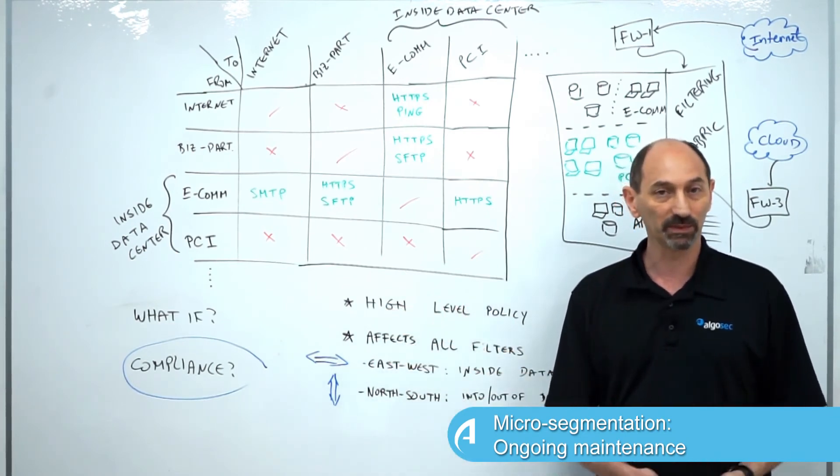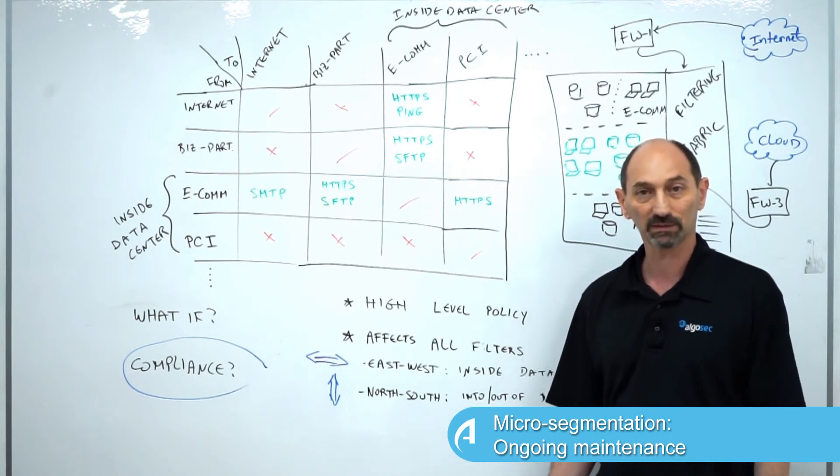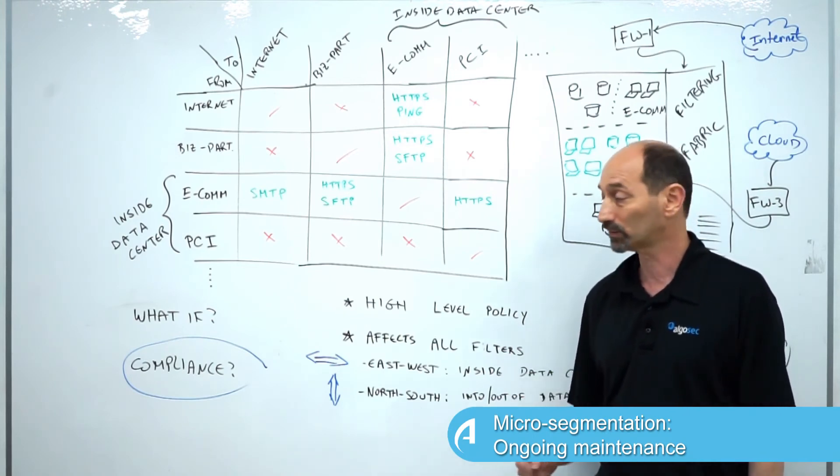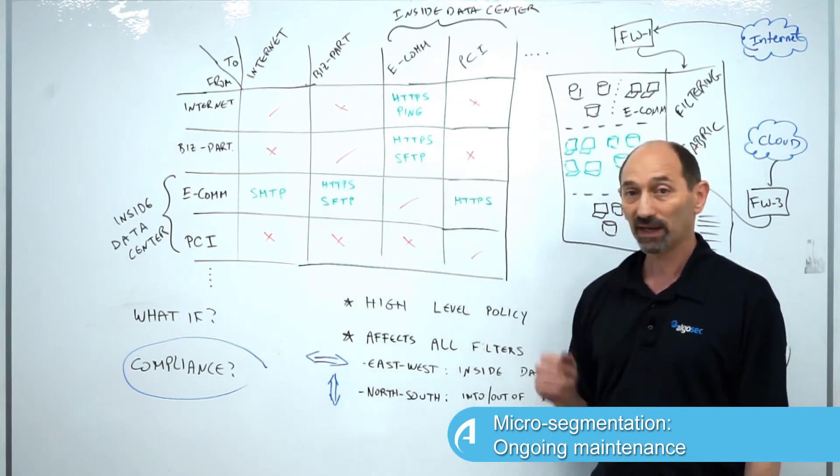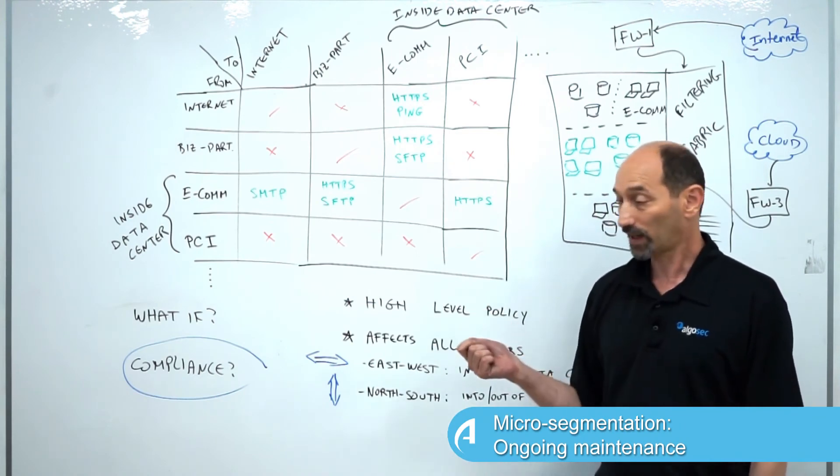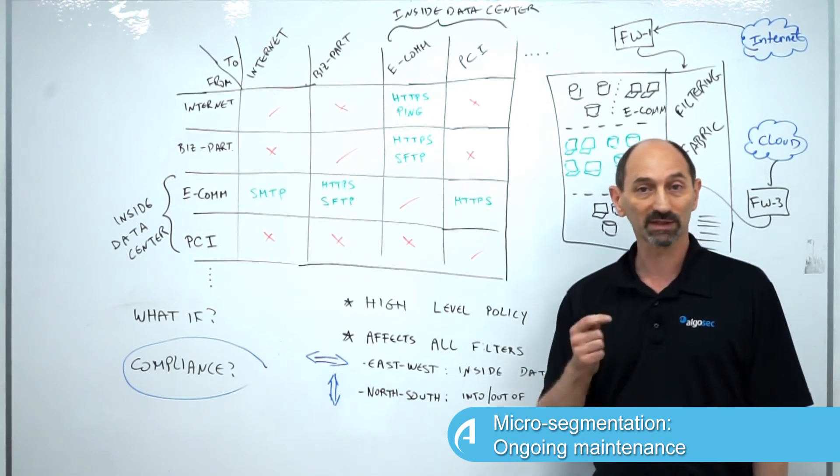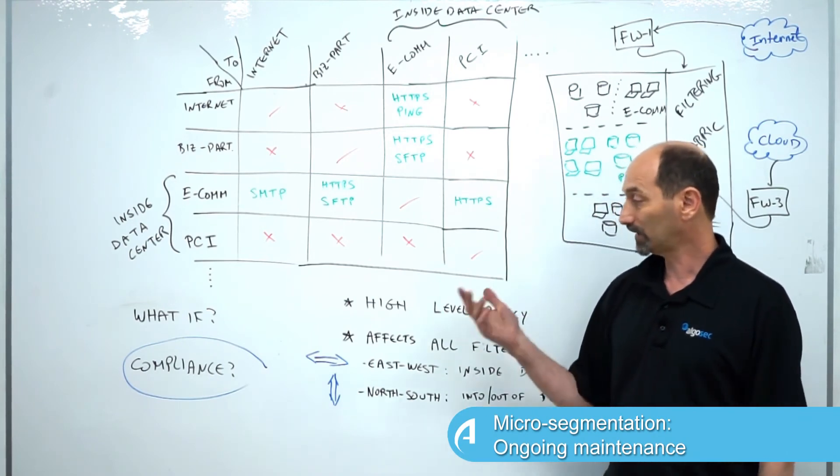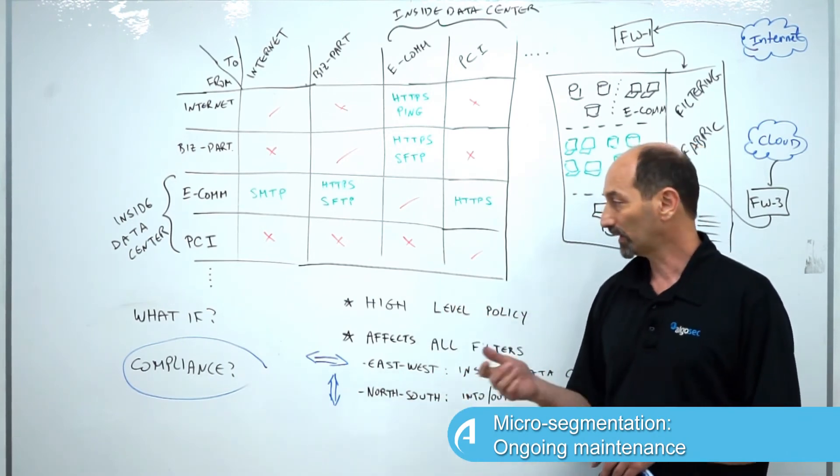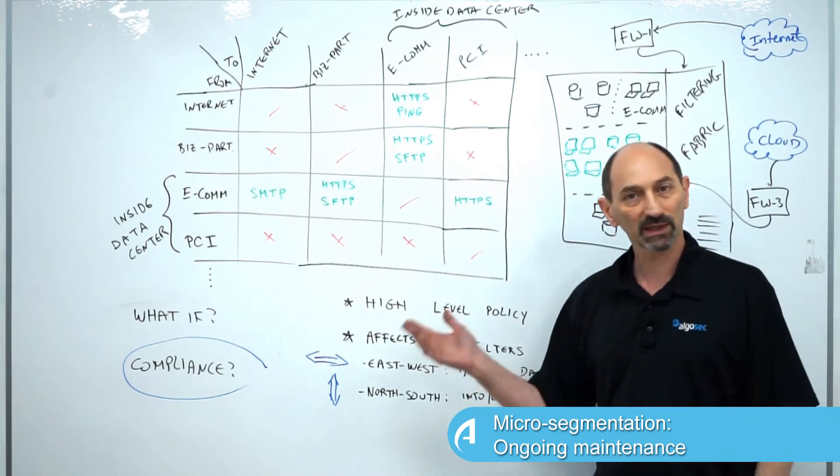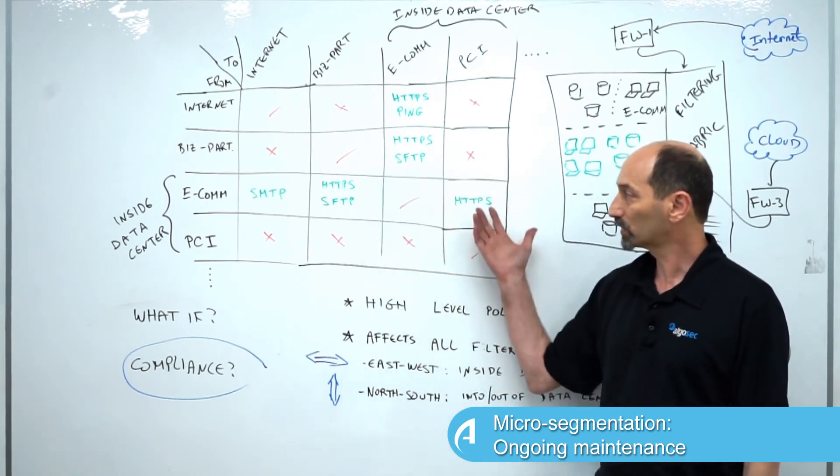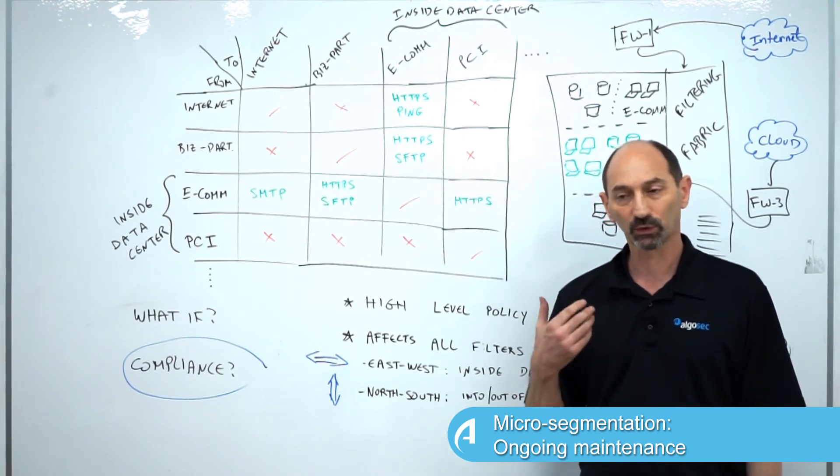You need periodically to check whether the policy that you've defined is in line with the policy that's actually being enforced by the various filtering technologies inside the data center and out. The same matrix can be used to check whether what's in it is in line with the policies being enforced and identify any kind of violations if there are any.